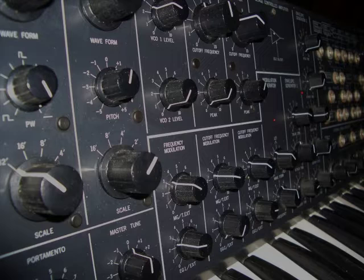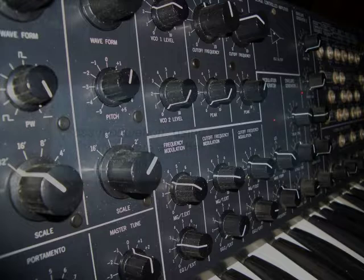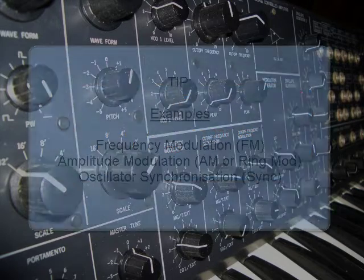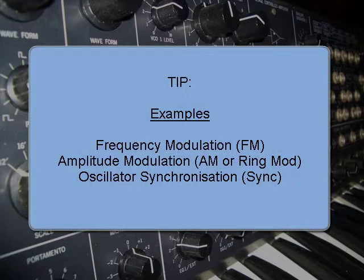Hello, welcome back. So now we're going to look at cross-modulation. Cross-modulation is when you have a pair of oscillators and you use one oscillator to affect the other. We're going to look at three different types: FM, frequency modulation; AM, amplitude modulation, sometimes known as ring modulation; and thirdly, oscillator sync.